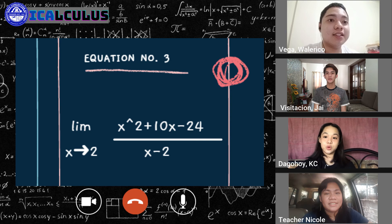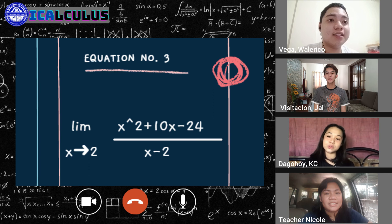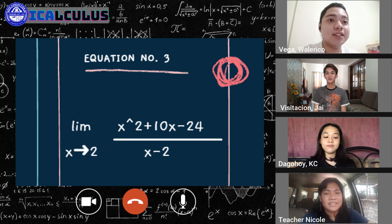So number 3 po is limits as x approaches 2. It's equals to x squared plus 10x minus 24 over x minus 2. So first step po is magfactor out muna tayo. So hahanap tayo ng dalawang number na kapag pinagmultiply ay mag-equal sa 24. At yung dalawang number na yun, kailangan din po mag-equal sa 10. So ang nahanap ko pong number ay positive 12 at negative 2. So nakuha ko po yung positive 12 and negative 2 because 12 times 2 is equals to 24. Tapos 12 minus 2 is equals to 10. So limits as x approaches 2 is equals to x plus 12 times x minus 2 over x minus 2. So ika-cancel na po natin yung x minus 2 kasi pareho naman sila. So ang natira na lang po ay yung x plus 12. So magiging limits as x approaches 2 is equals to 2 plus 12. Sinemstitute na po natin yung 2. And it is equals to 14.